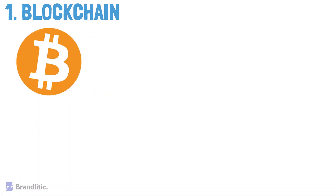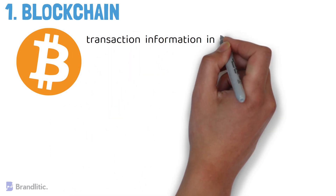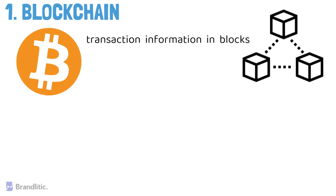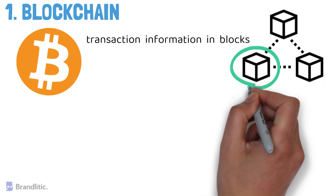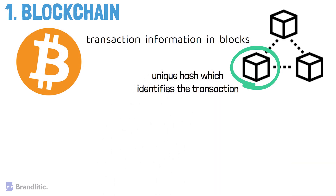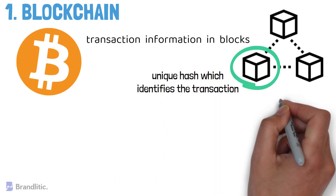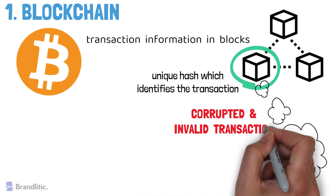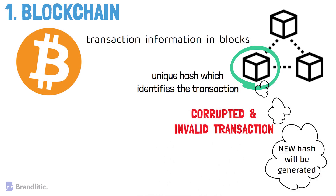Number one: blockchain. In the white paper that brought Bitcoin to the world, the author noted that a network would collect transaction information in blocks, and other blocks would build onto each other, forming a chain of blocks — hence the name blockchain. Each block produces a unique hash that identifies the transaction, and if one attempted to alter the details of the transaction, a totally different hash will be generated.